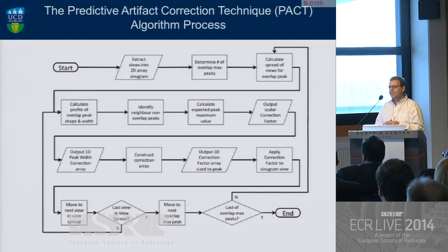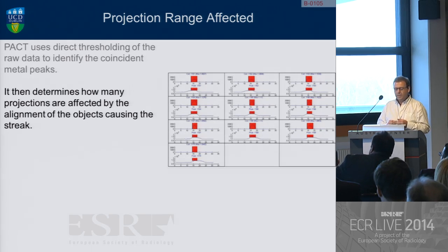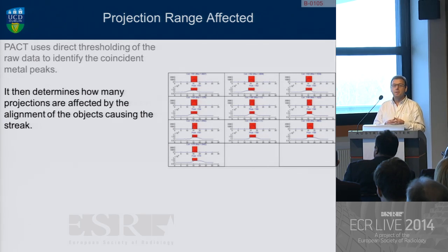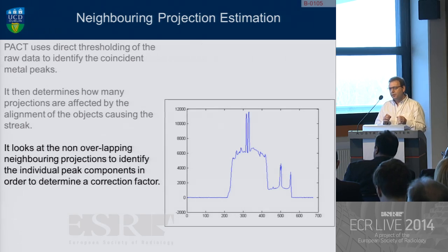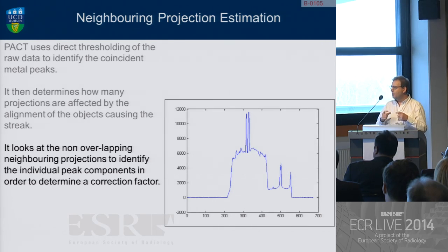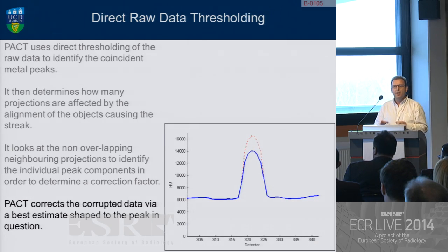This is the PACT algorithm — predictive artifact correction technique — that I wanted to work on. I'll take you through it visually. I use a thresholding technique to actually identify the metallic coincidence events within the raw data. We then analyze the projections for the entire overlap, because this may happen over a degree or two degrees, so quite a few projections may be contaminated. We also analyze very carefully the shape of the peaks, because they're quite skewed as the objects come into alignment and then go out of alignment again. Then we step very slightly to the side of the coincidence event, and we can actually see the separate objects just before they come into alignment. At this stage, we can identify what the individual components are, predict what the value should be from the reconstruction process, calculate a correction factor, and apply that correction factor in correlation with the shape of the peak — whether it's slightly skewed or in perfect alignment.